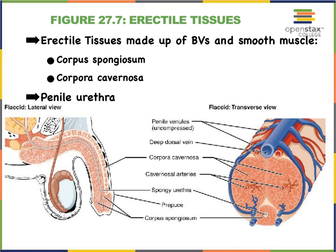Now let's look at the erectile tissues present in the penis that allow it to become hard or erect. Surrounding the urethra we have the corpus spongiosum, and in addition we have two large cylinders running along the length of the penis collectively referred to as the corpora cavernosa. Corpora is plural for corpus, and corpus refers to body in Latin. Looking at a flaccid penis, we see the urethra surrounded by the spongy erectile tissue — the corpus spongiosum — which is why this portion is called the spongy urethra.